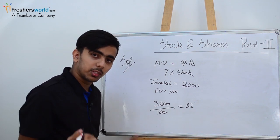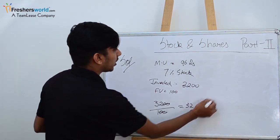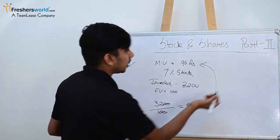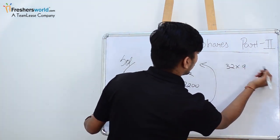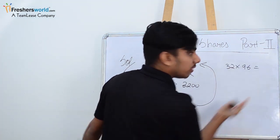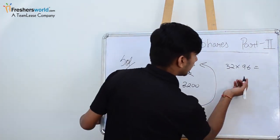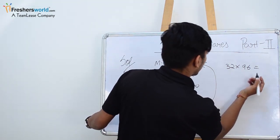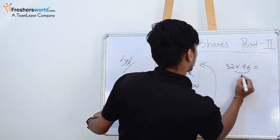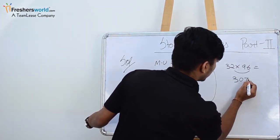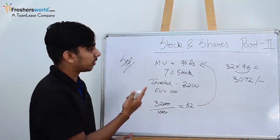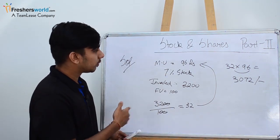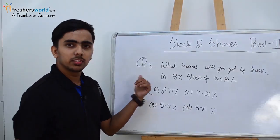Let's solve this. How many shares we have got by investing 3,200 rupees? 32 shares we have got. And what is the market price for this? 96. So 32 into 96 will come as 3,072. That is the value you need.